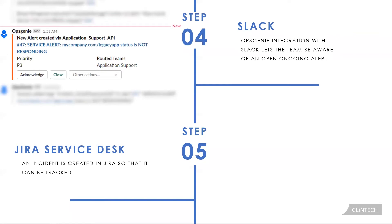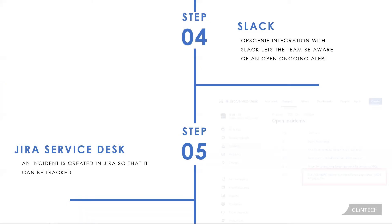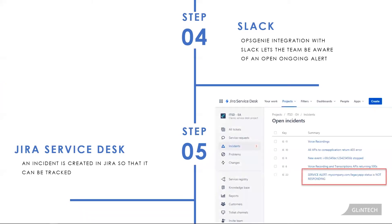Because your team also wanted visibility of issues, anything above P3 should also create a Jira issue. This is a second integration with Jira Service Desk — it automatically creates a Jira incident so it can be tracked. This integration is bidirectional, so an update in one system will update the data in the other.